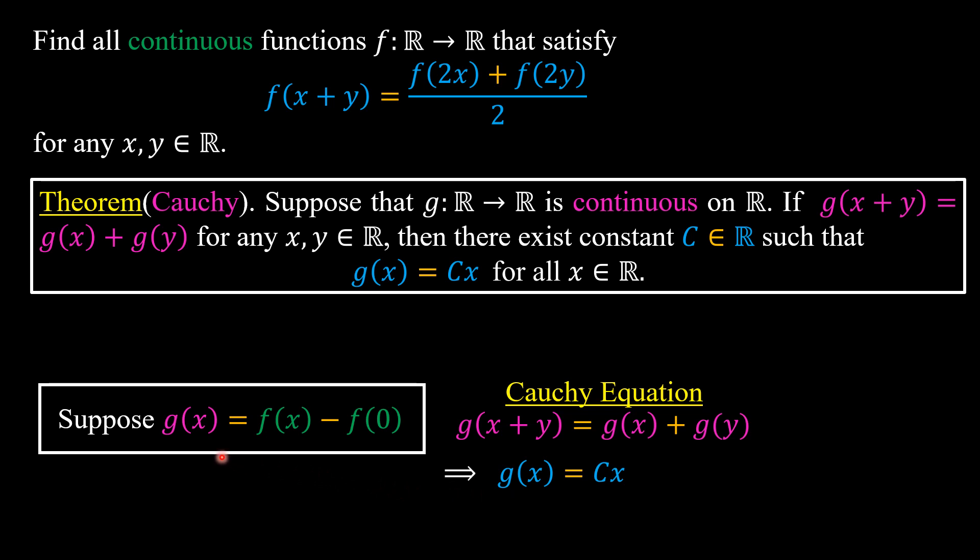And then substitute the definition of g(x), we have f(x) equals cx plus f(0). Since f(0) is a constant, then we can suppose that f(0) is d, which means f(x) is in the form of cx plus d.